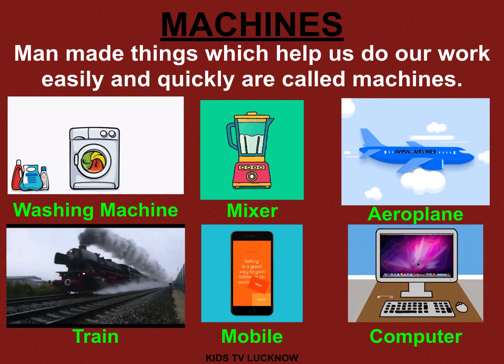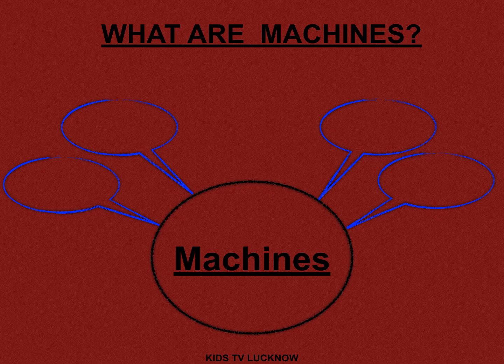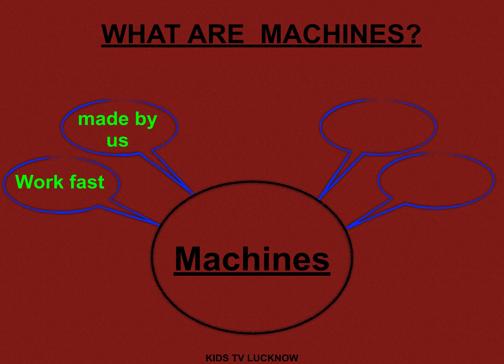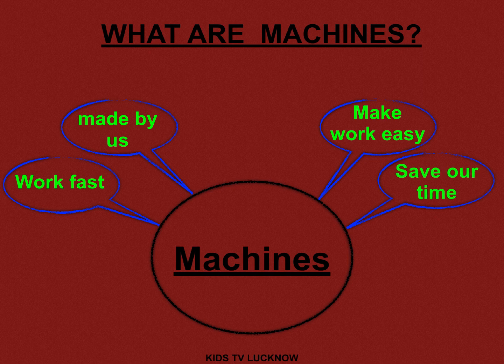Now let us see what we understand by machines. Machines are made by human beings. They work very fast — faster than human beings. They make work easy. In just a few seconds or minutes we can complete our work using machines. So machines are very helpful.